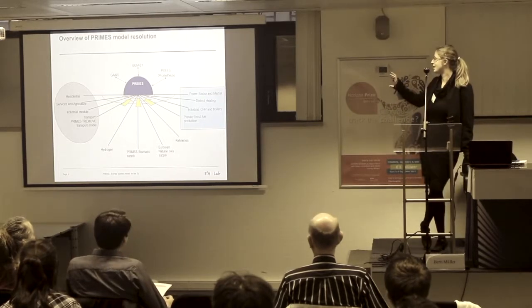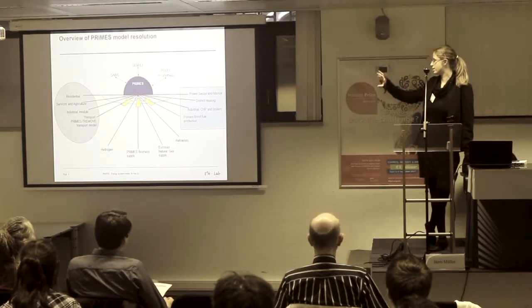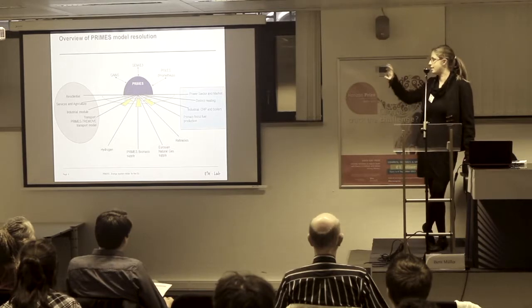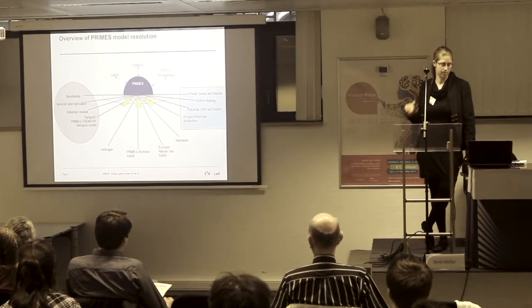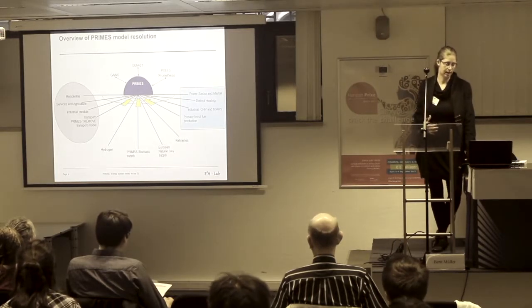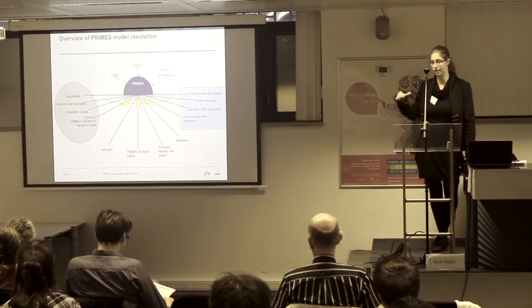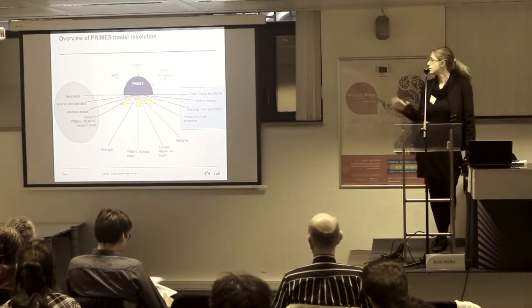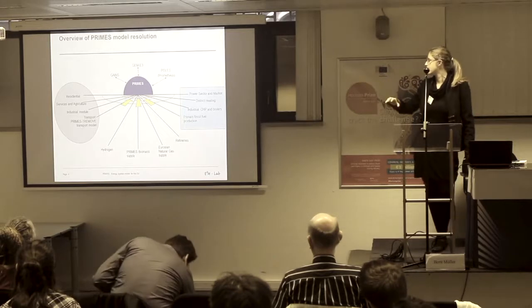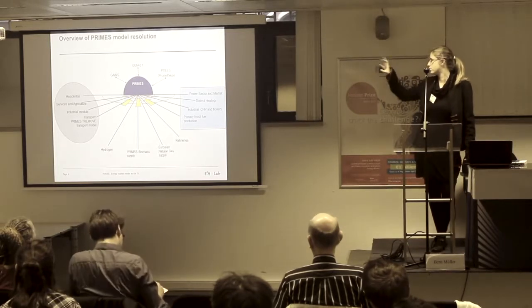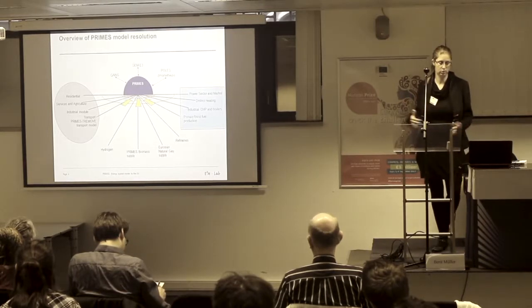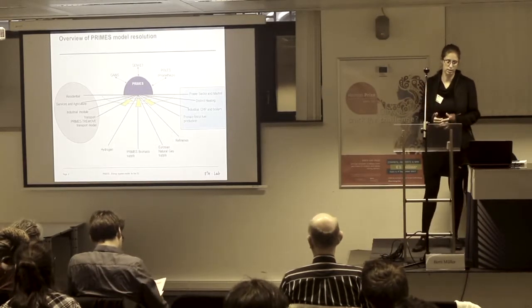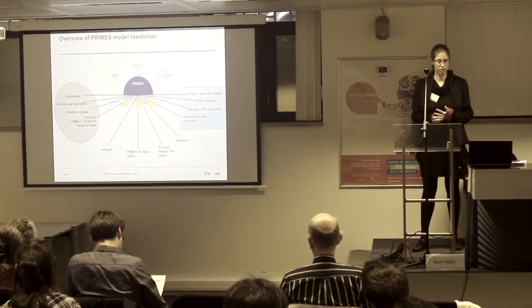Basically, this shows what are the different interactions of the model. On the left-hand side, you see the demand side, which are each a separate model. There's the residential and the services and agricultural sectors, the industrial model, and the transport model in the PRIMES-TREMOVE model. That is basically the demand side. Then on the other side, which all flows into PRIMES, is the power sector energy modeling, which is split into district heating, industrial CHP and boilers, and obviously the primary fossil fuel production.